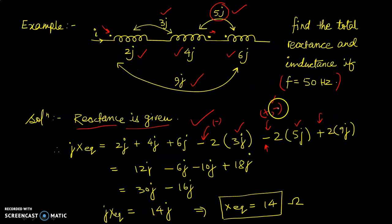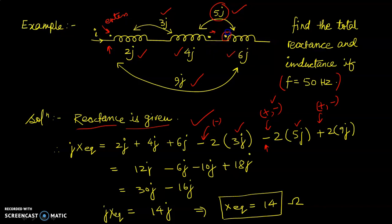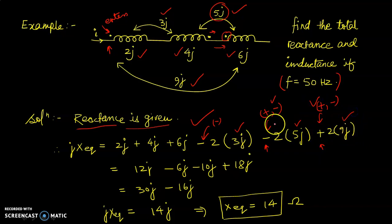For the mutual effect between inductors 1 and 3: at the dot of inductor 1, current enters, and at the dot of inductor 3, it also enters. So put a plus sign, giving plus twice j9. The calculation gives: j2 plus j4 plus j6 minus j6 minus j10 plus j18, which equals j14. Therefore X equivalent equals 14 Ohms.